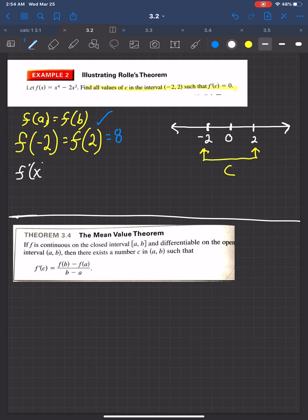So, f prime of x. Well, that's an easy derivative to take. That's just going to be four x cubed minus four x. All right. Now, let's just, we know that we're going to set that derivative equal to zero. And let's just make life easier on us by factoring everything out. So, I'll factor out a four x and then I have x squared minus one. So, that's the difference of two squares. So, that's just going to be four x times x minus one times x plus one.